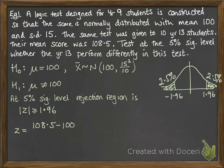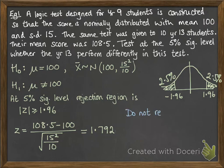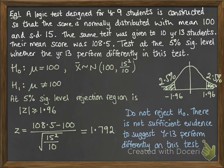Now we work out our z value where our mean was 108.5, and that comes to 1.792. That is not greater than 1.96, so we do not reject the null hypothesis. There's not sufficient evidence to suggest that year 13 performed differently on this test.